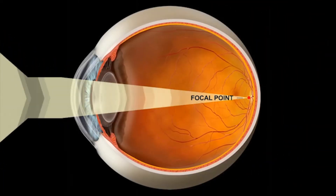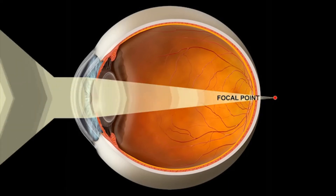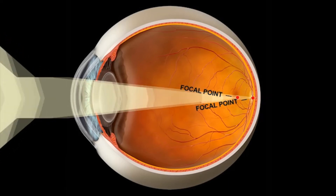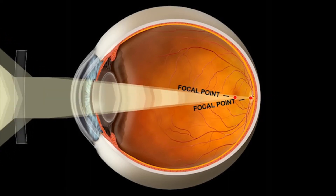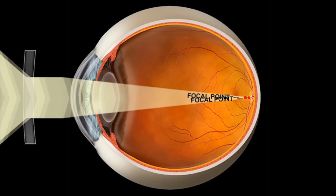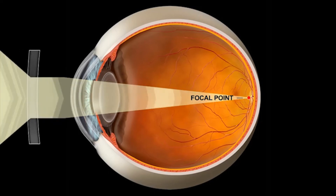If the light does not focus properly, you may be nearsighted, farsighted, or astigmatic. Glasses and contact lenses are made to bend light at a precise angle to offset the error that occurs in your eye.